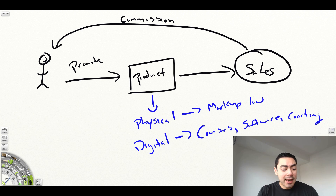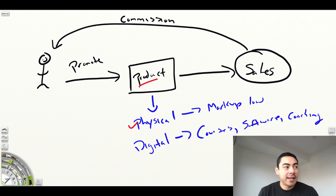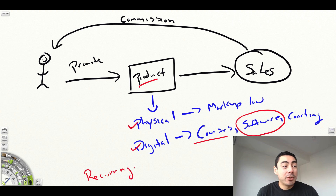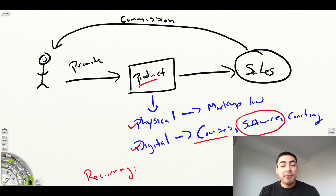There are also affiliate marketing programs geared toward software where you can build a recurring income. Many softwares operate on a monthly subscription model. When you get people to enroll in these subscriptions, companies will pay you a monthly commission for as long as that person stays a member. Membership sites work the same way. So maybe you won't make a huge upfront commission, but you'll earn maybe $10 a month per person.